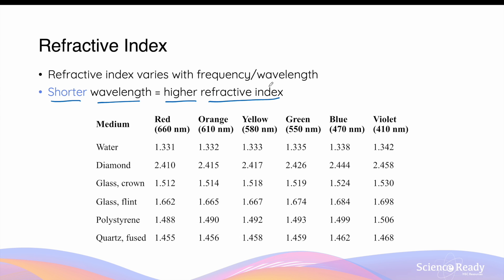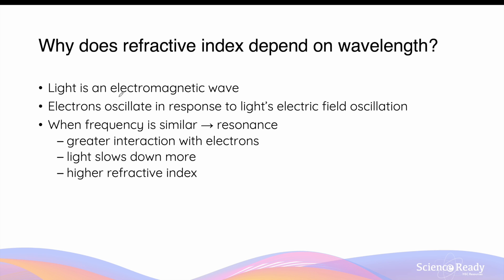This has implications on how light refracts and is the underlying principle of how dispersion works. In the wave model, light is an electromagnetic wave consisting of oscillating electric and magnetic fields. When light reaches a new medium, the electrons in that medium oscillate in response to the light's electric field. When the frequency of that oscillation is similar to the natural frequency of the electrons, it causes resonance, which leads to a greater interaction and causes light to slow down more — the reason why a higher refractive index leads to a slower speed of light and greater refraction.